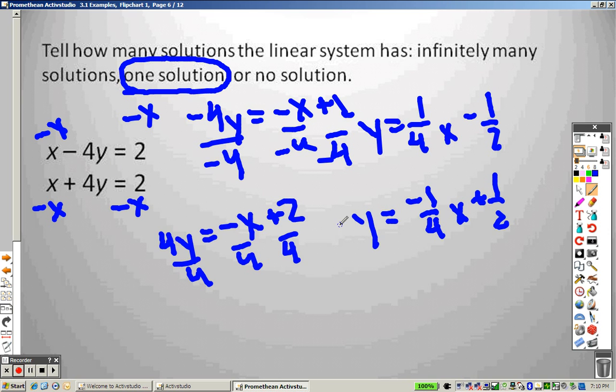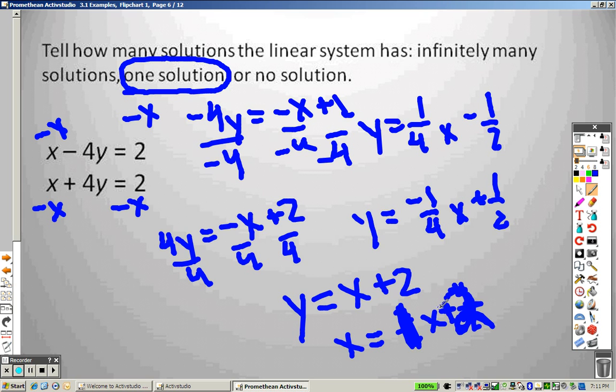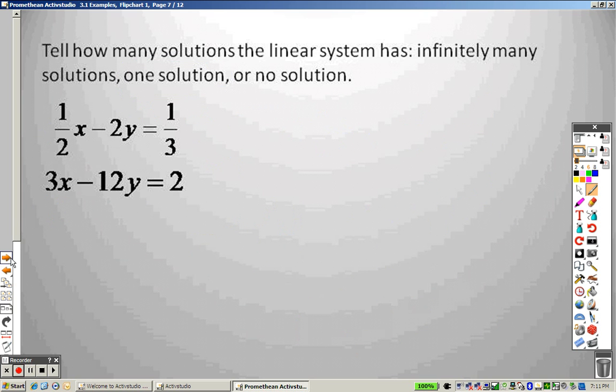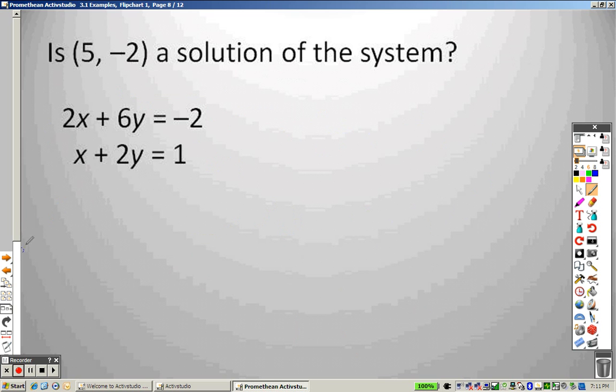You know how you get infinitely many solutions? If it's the same line. If I said, hey, graph this. And then you know what? Here's what I want you to do. I want you to graph this. Hmm. Interesting. 2 divided by 2 reduces to 1. 4 divided by 2 reduces to 2. It's the same line. If you're graphing the same line, that's how you know you'll have infinitely many solutions. Okay. That's how you know.